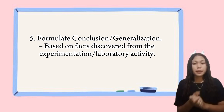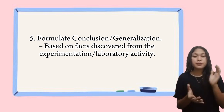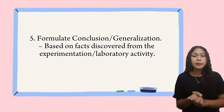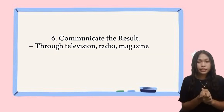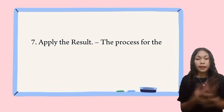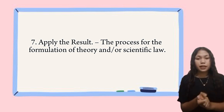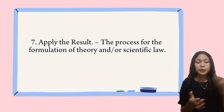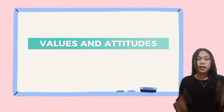Based on the results of experiments and observations, scientists formulate a conclusion or generalizations about the problem. For example, if the plants that receive more light grow faster, scientists might conclude that light helps plants grow faster. Next, communicate the results — scientists communicate the results to others through television, radio, magazines, and science journals. Finally, scientists apply the results to formulate a theory and scientific laws. For example, based on their experiment with plants and light, they might develop a theory about how plants use light to grow.